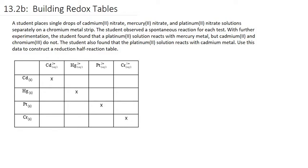A student places single drops of cadmium-2 nitrate, mercury-2 nitrate, and platinum-2 nitrate solutions separately on a chromium metal strip. It's just an experiment with a simple chromium metal strip and an eyedropper placing these different solutions on it. The student observed a spontaneous reaction for each test. We obviously don't expect a metal to react with its own ion, but we need to compare how a metal reacts with the ions of another metal.